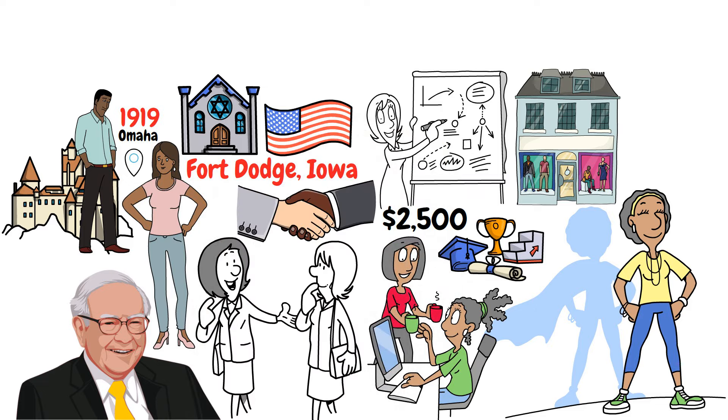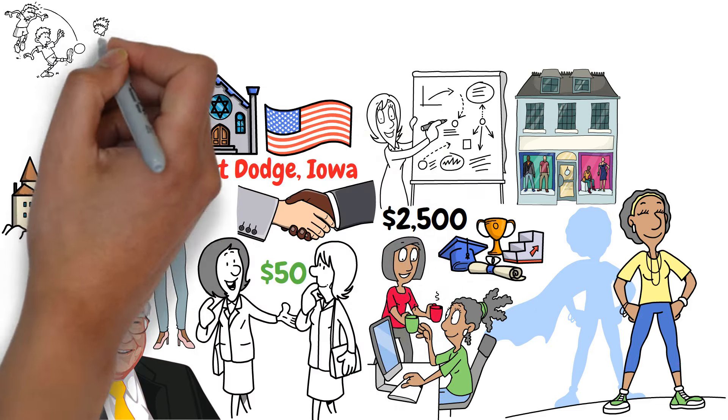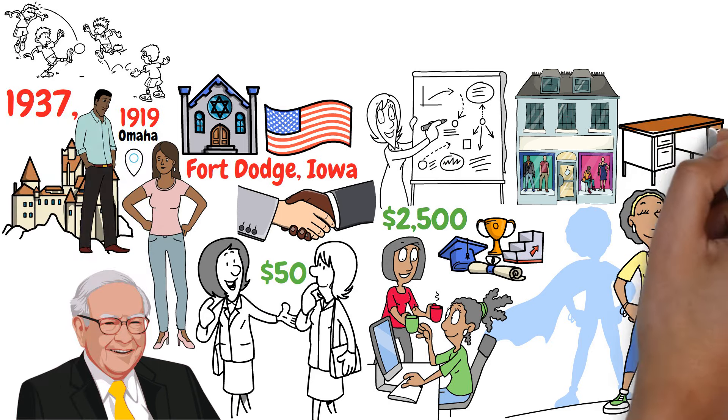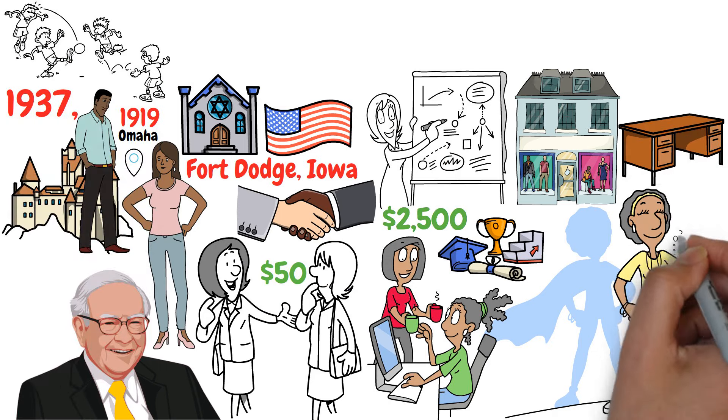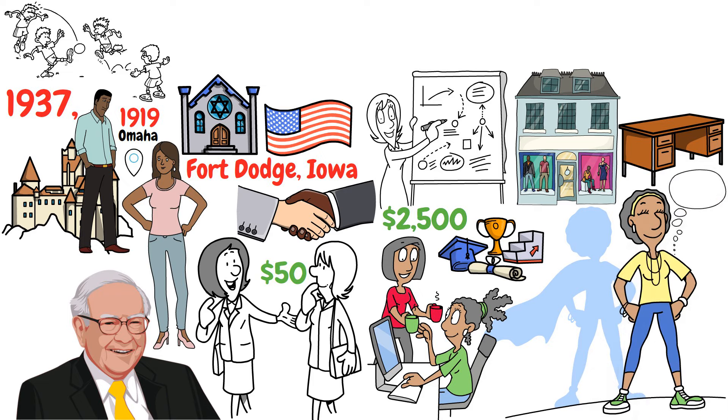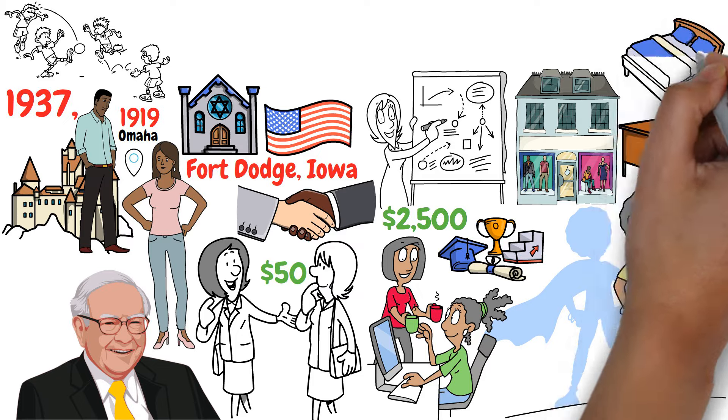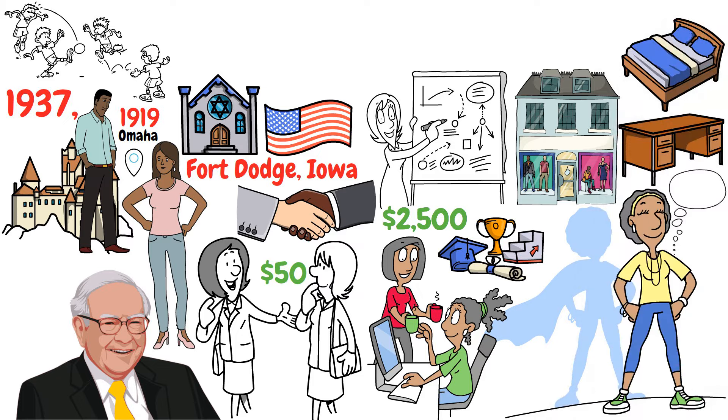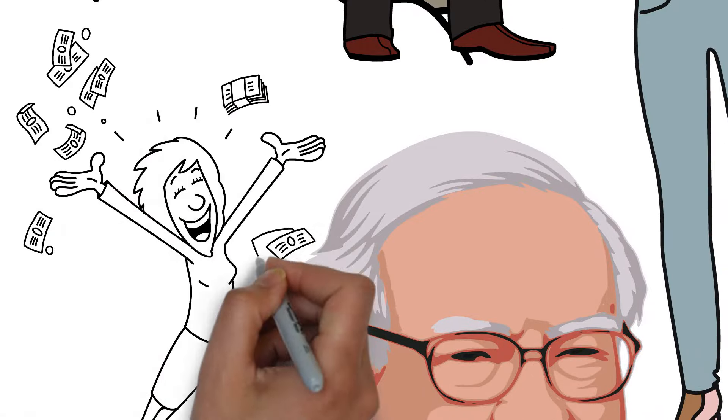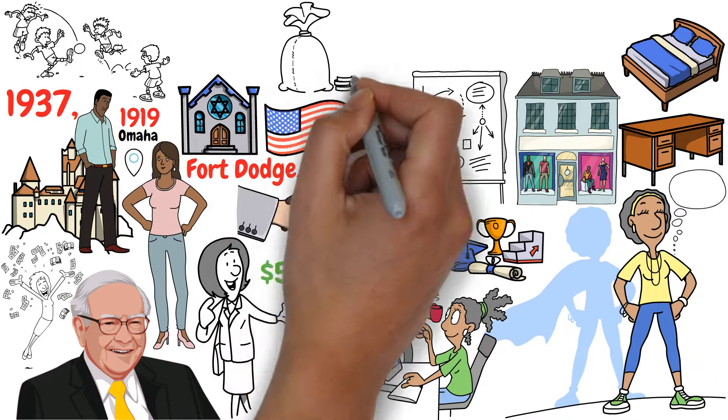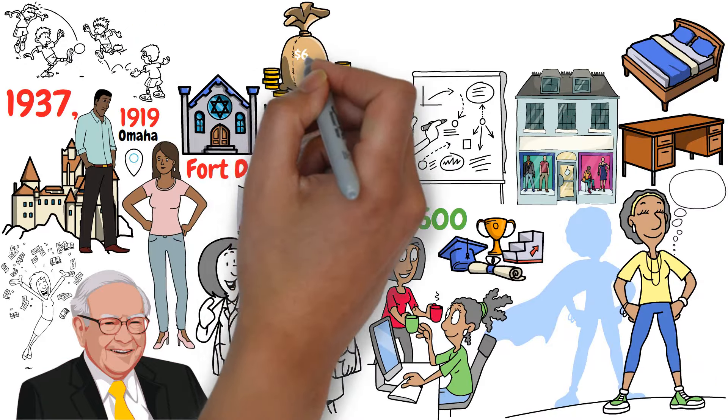For 20 years, Rose worked hard, selling used clothes to bring her family to America, $50 at a time, and raising four children. By 1937, with $2,500 saved, she traveled to Chicago to buy furniture for the store she dreamed of opening. Rose started her furniture store with no formal education and just $2,500. Through her dedication, she turned that dream into a successful reality.